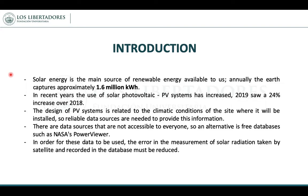So, it is important to have databases that provide dynamic information, but this information is not accessible to everyone. With this work, we propose using three databases such as NASA's Power Viewer for obtaining this information. For this data to be used, the error in the measurement of solar radiation taken by the satellite and recorded in the databases must be reduced.